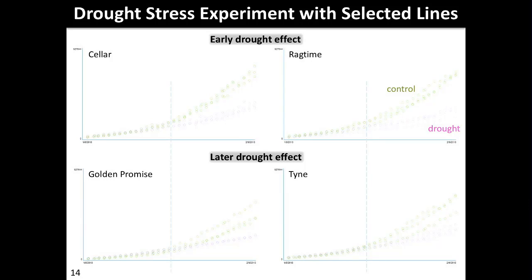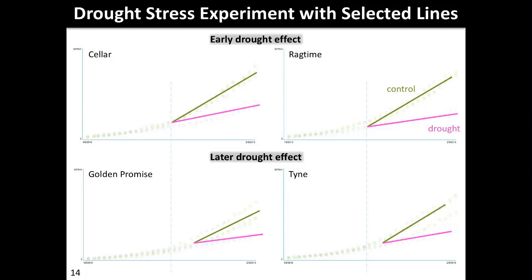From the initial data, we could already define a number of lines which have a very early drought effect in their growth, and lines which show a later drought effect. Growth plotted against time of cultivation started to differentiate between the drought condition and control lines. The later drought effect was 10 to 14 days later than for the other lines, which is substantial within a four-week time course.